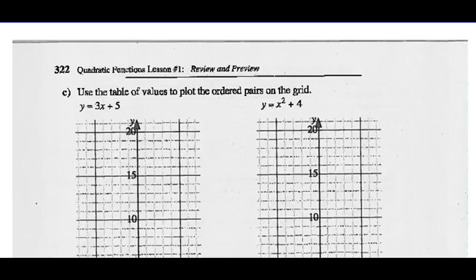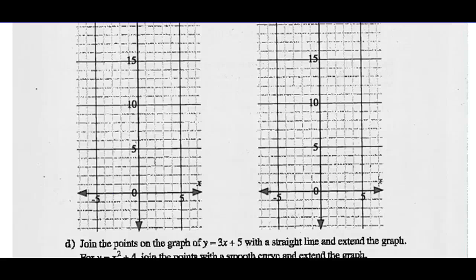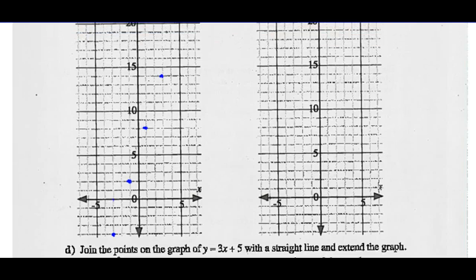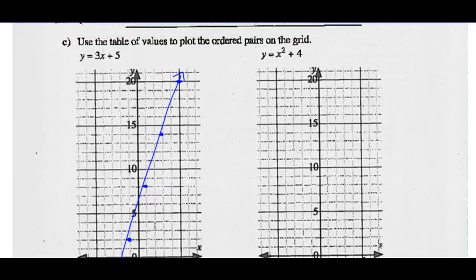Part C: use the table of values to plot the ordered pairs on the grid provided. For Y equals 3X plus 5, when X was negative 3, Y was negative 4 — plot that point. When X was negative 1, Y was positive 2 — plot that point. When X was 1, Y was 8. When X was 3, Y was 14. And finally, when X was 5, Y was 20. So you get a straight edge and connect those points all the way through the grid, putting an arrow on each end. That's the graph of the line Y equals 3X plus 5.